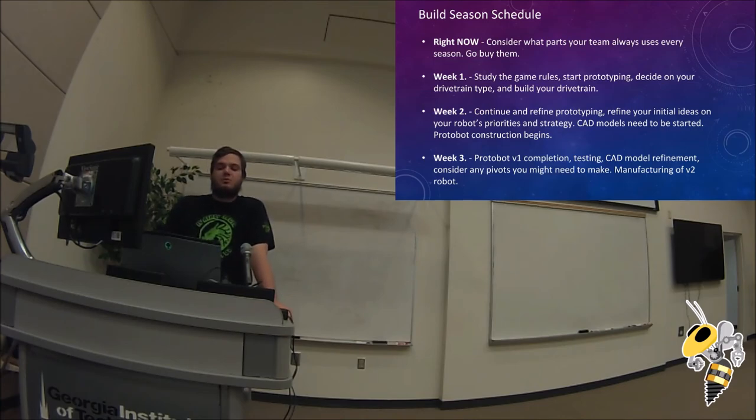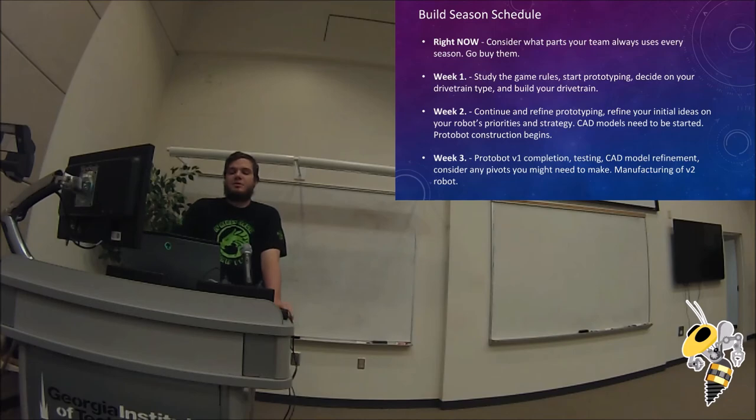So this is just an overview. Where most teams and my team starts is where we go with week one. We're studying the game rules. We're giving prototypes created. Never have I ever worked with a team that didn't have their drivetrain fully decided on by the first week. And if you can't do that then you need to reevaluate why your drivetrain is taking you longer to build. And you want to typically have that drivetrain built that first week if not in the first few days. Week two, you've got to continue and refine your prototypes. You should be getting a better idea of what your team's prototypes are. Which one's better versus another. And so you can better formulate your overarching strategy from that.